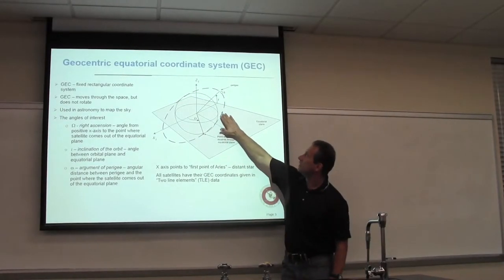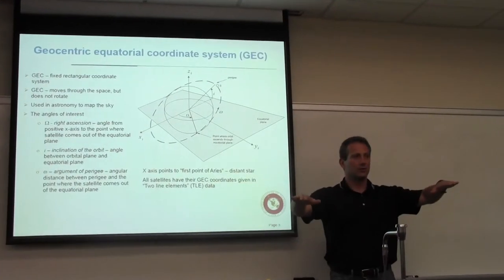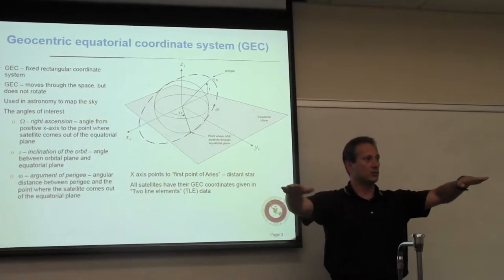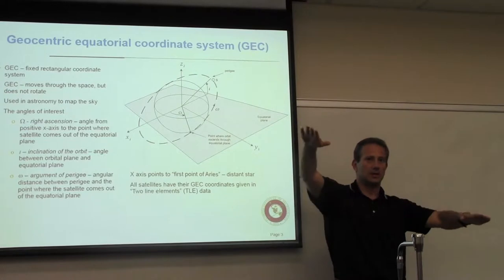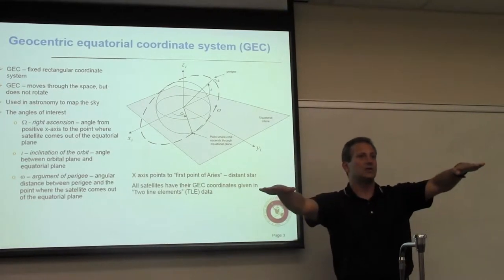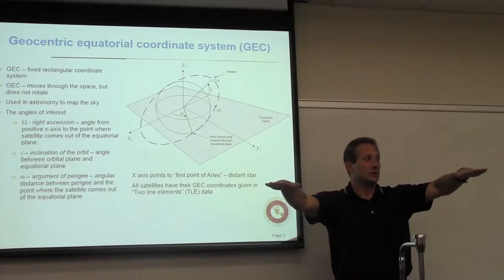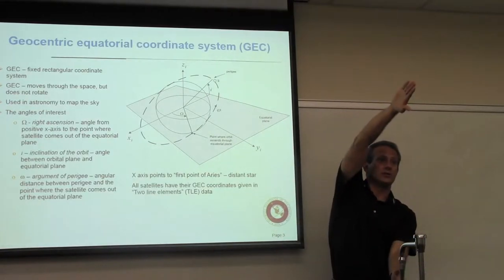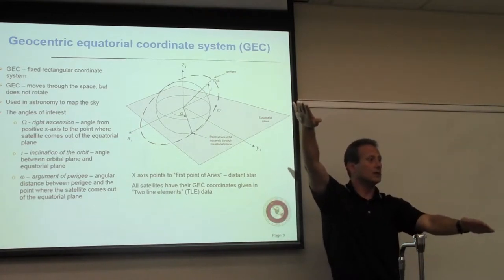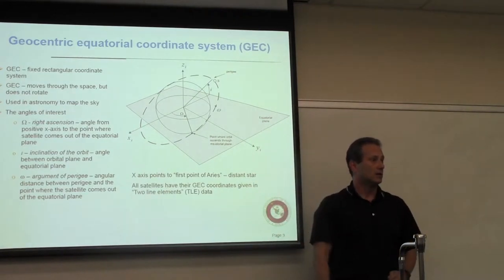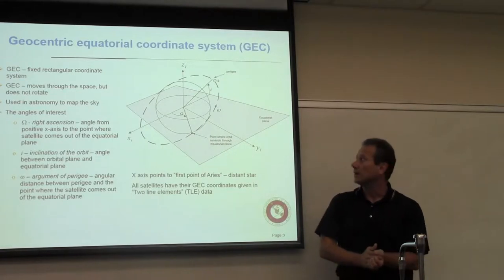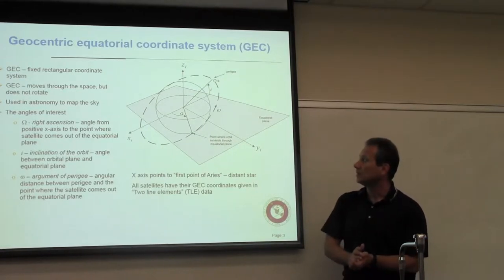The first parameter is i, the inclination of the orbit relative to the equator. If the orbit sits in the equatorial plane, inclination is zero; if it's perpendicular, inclination is 90 degrees. Anywhere between zero and 90 degrees is possible for the orbital plane.